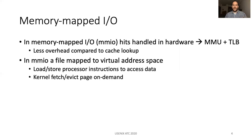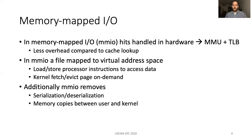In memory-mapped I/O, a file or device is mapped to a process virtual address space. Applications can use processor load/store instructions in order to access data. In this case, the kernel is responsible for fetching and evicting pages on demand. Memory-mapped I/O can provide more optimizations as it can remove the serialization and deserialization cost in the common path. This is possible because an application can access its data with load/store instructions, enabling the use of the same format for both in-memory and persistent data. Additionally, in some cases, it can also remove memory copies between user and kernel space.